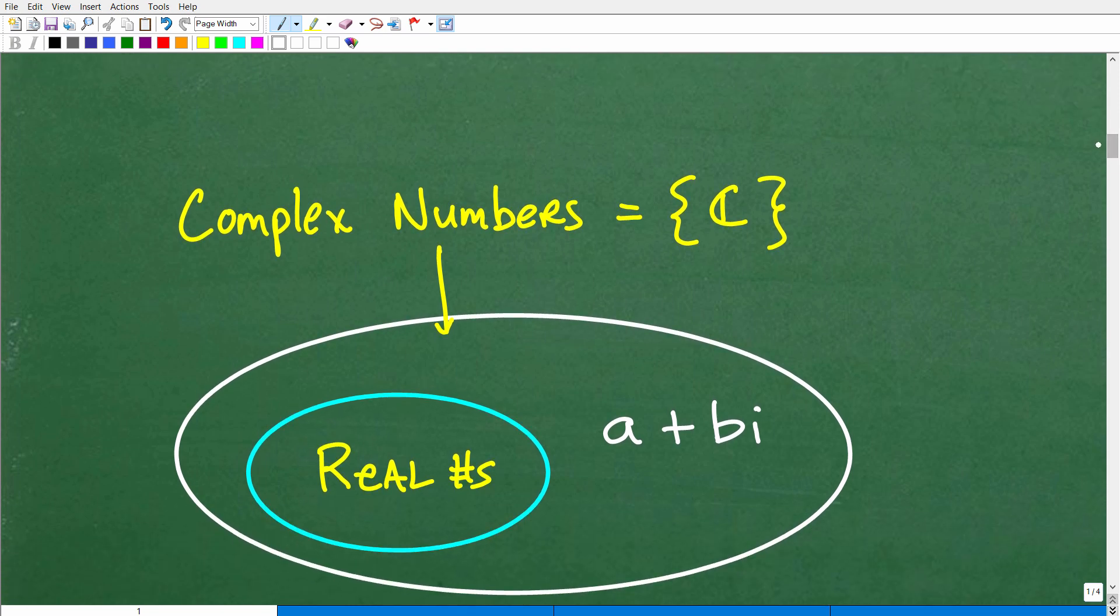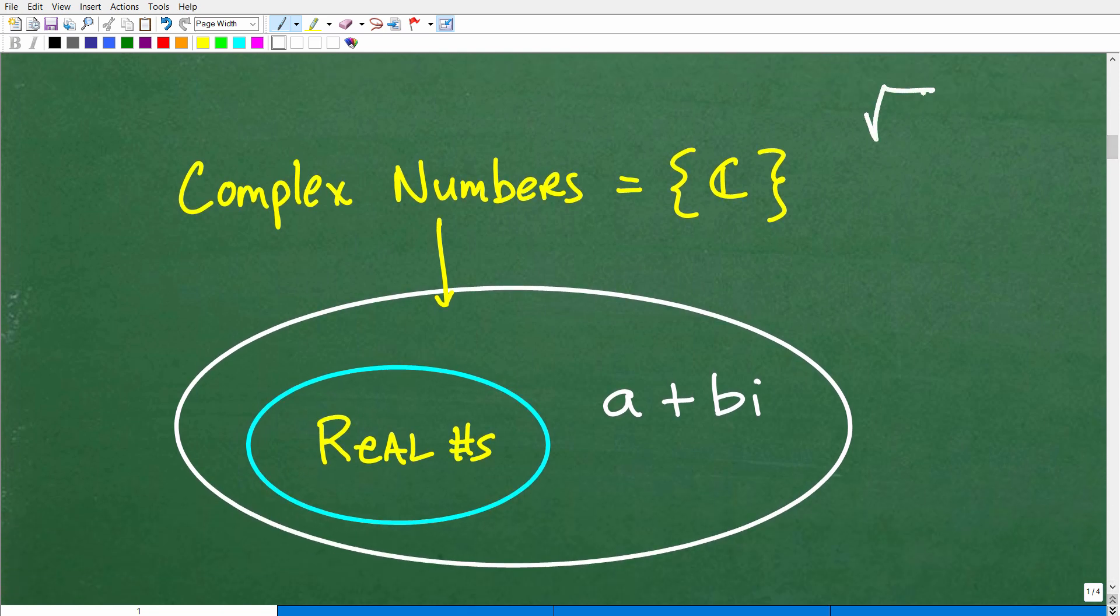Okay, so what we're talking about is something called complex numbers. So the square root of negative one is kind of our introduction to something called complex numbers. So what you need to know is this. The numbers that you've studied up to this part of your math education have been real numbers. We learn real numbers. We master all this stuff for positive and negative numbers, fractions, decimals, square roots, square roots of positive values. So that's the real numbers. But when we come across a situation like this, we need to open up our number systems to more complicated number systems. And that's why we have the complex numbers.